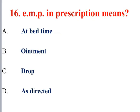Question 16: What does the prescription abbreviation 'EMP' mean? It means 'as directed.' Related abbreviations include GZT for gel, UNG for ointment, and HSS for testing purposes.